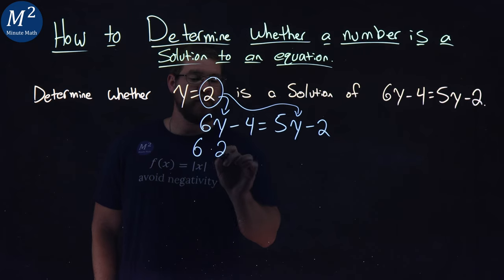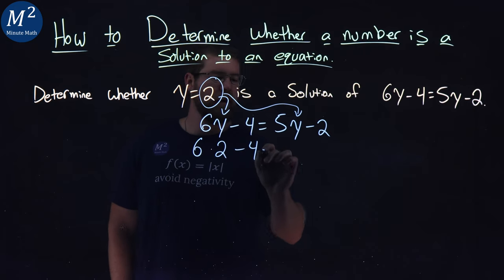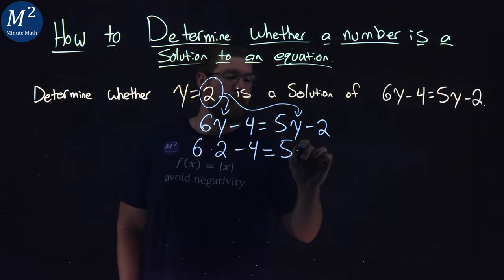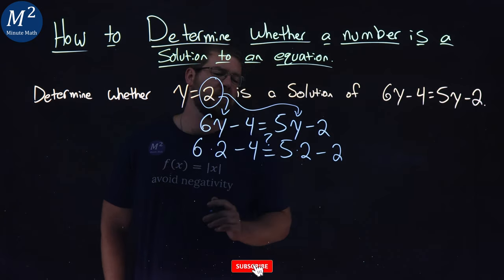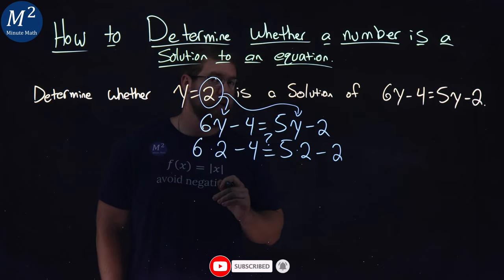So we have 6 now times 2 minus 4 equals 5 times 2, the second 2, minus 2.